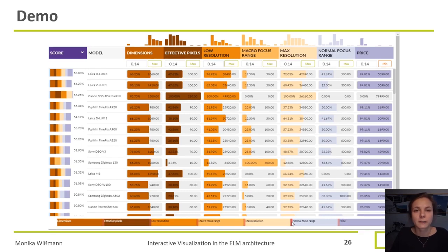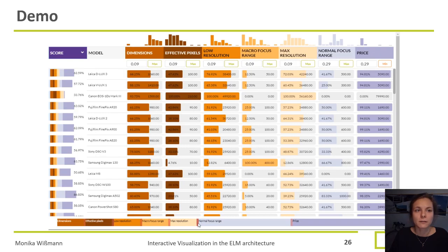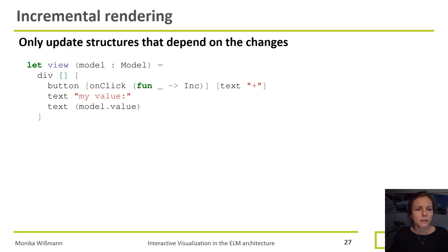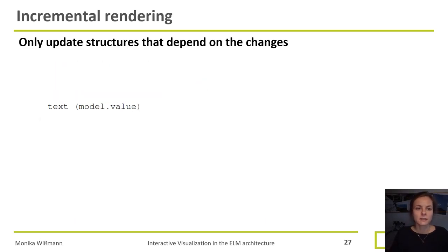Now let's take a look at our first implementation of the ranking view. We try to pull the slider left and right to change the weighting, but it looks pretty laggy. Why is it so slow? What happens in our current implementation is that every time the user interacts with the interface and changes the model, the whole view has to be re-rendered and recalculated. But is this really needed? No, not really. When we look at the code, the only field that is really affected by the changes is one specific text field.